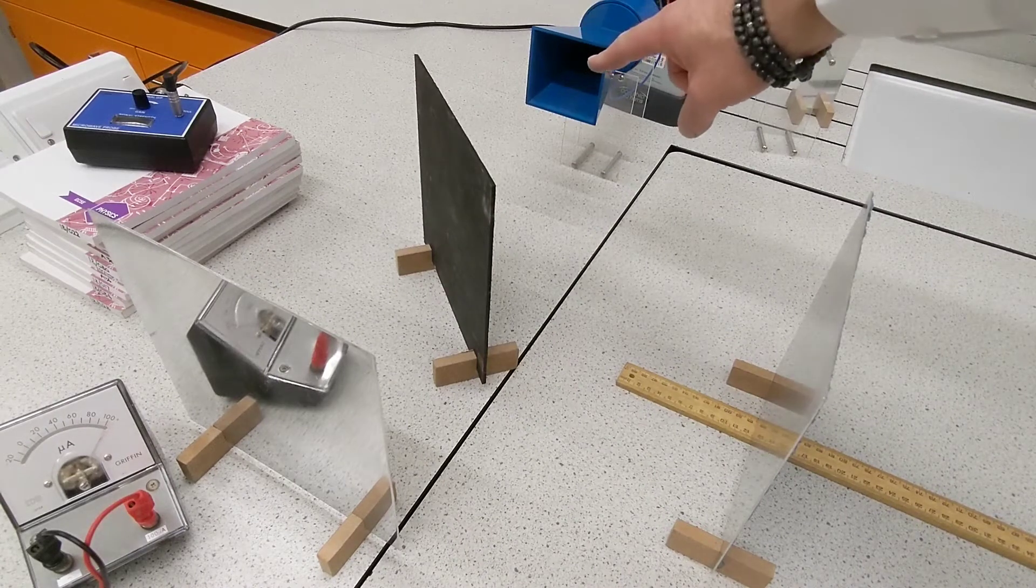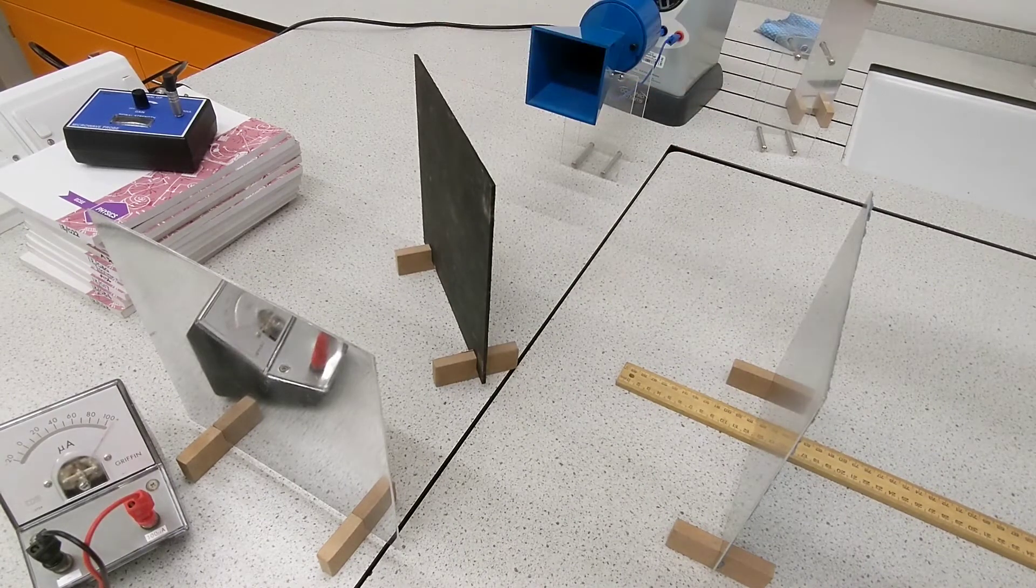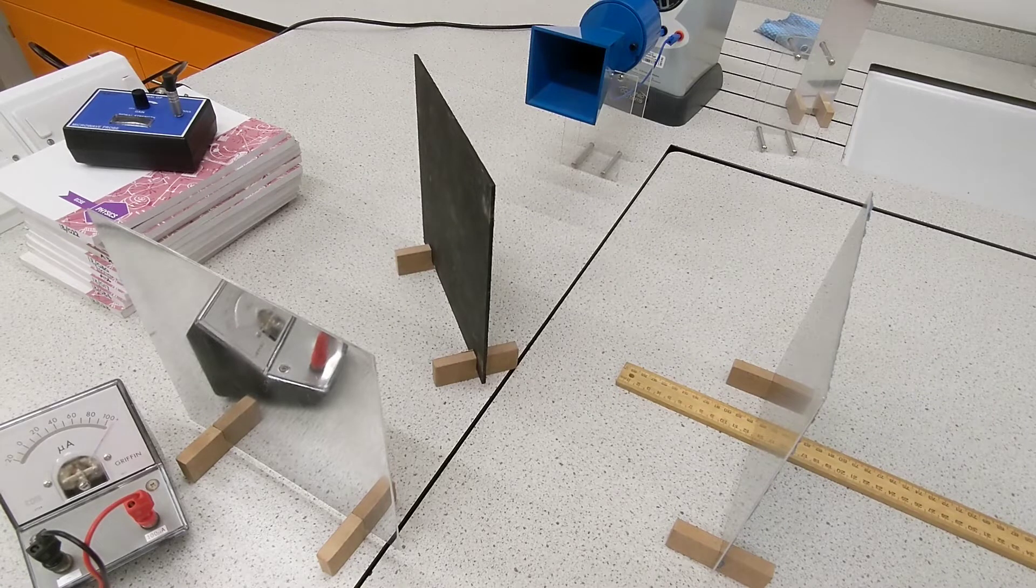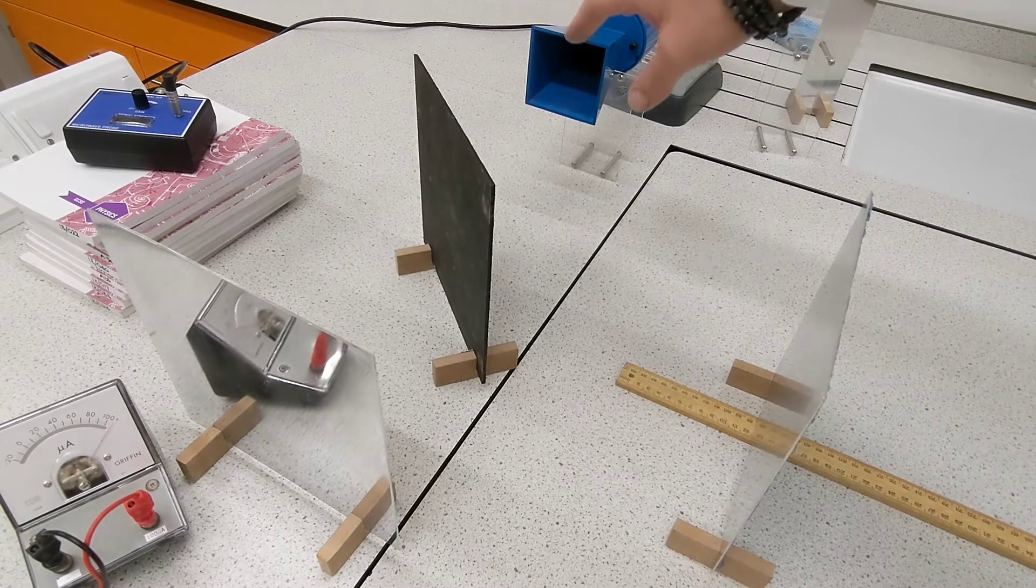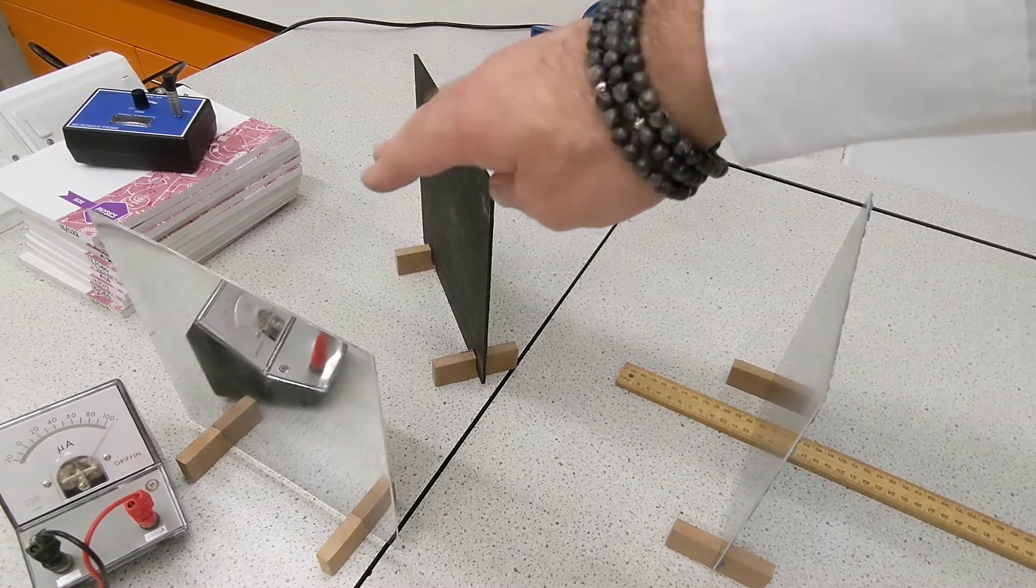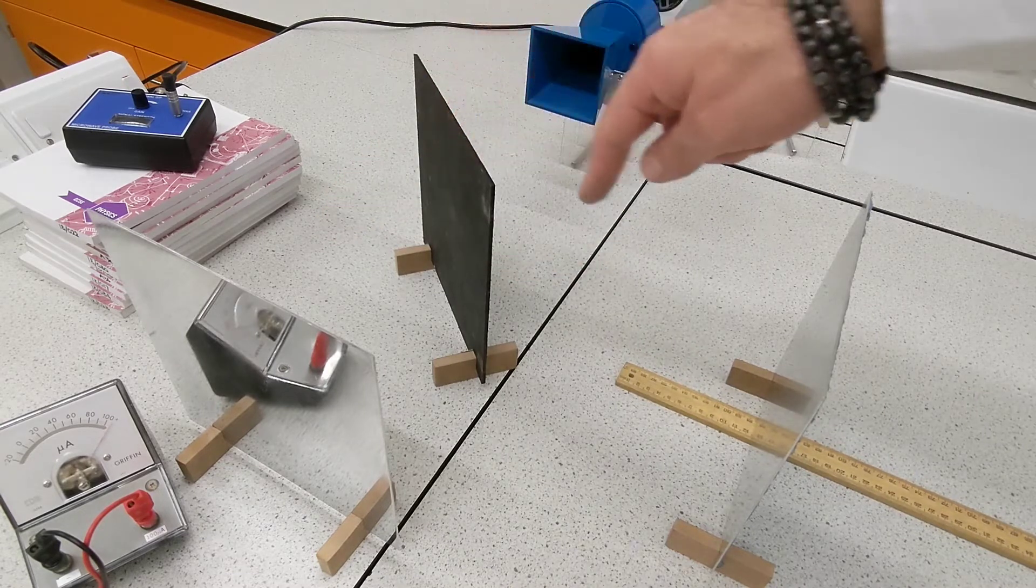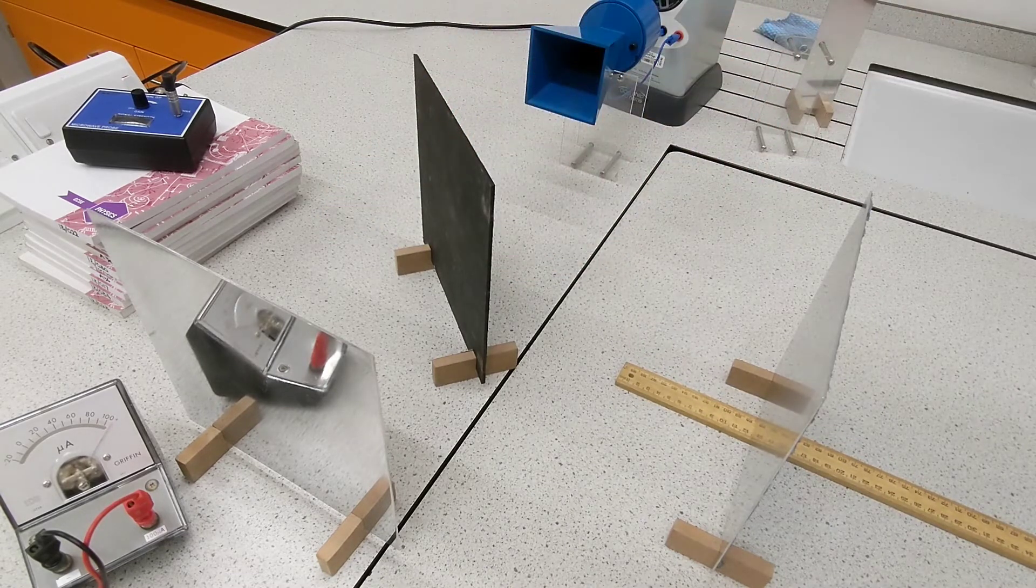Here we have a microwave emitter. We've got a beam splitter made out of hardboard, which allows 50% of the microwave radiation to pass straight through and 50% of it to be reflected in this direction.